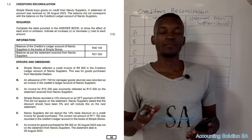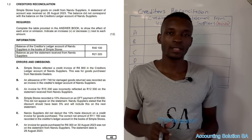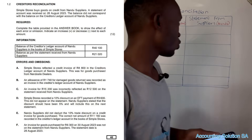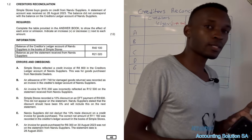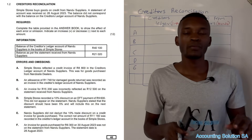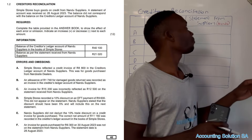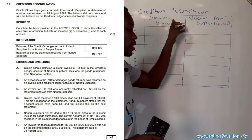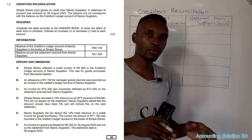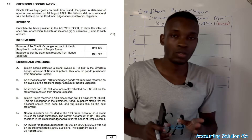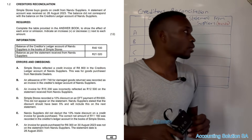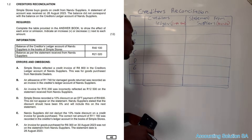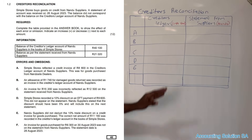In this video I'm going to do a creditors reconciliation statement. For today's lesson I chose this format. Remember, beside this format there is also another format which you have to know — under a creditors ledger, when we debit it's an increase, when we credit it's a decrease. Go and check the other videos so that you will be able to know both formats.